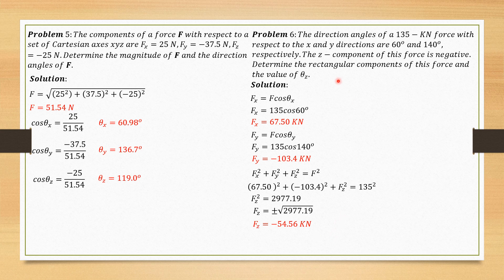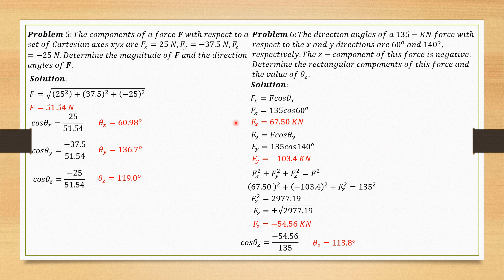These are the rectangular components of the force. For the direction angle θZ: cosine θZ = Fz / F = -54.56 / 135. Since the component is negative, we expect θZ to be more than 90 degrees, giving 113.8 degrees. You can verify the answers by ensuring the sum of the squares of all direction cosines equals approximately 1.